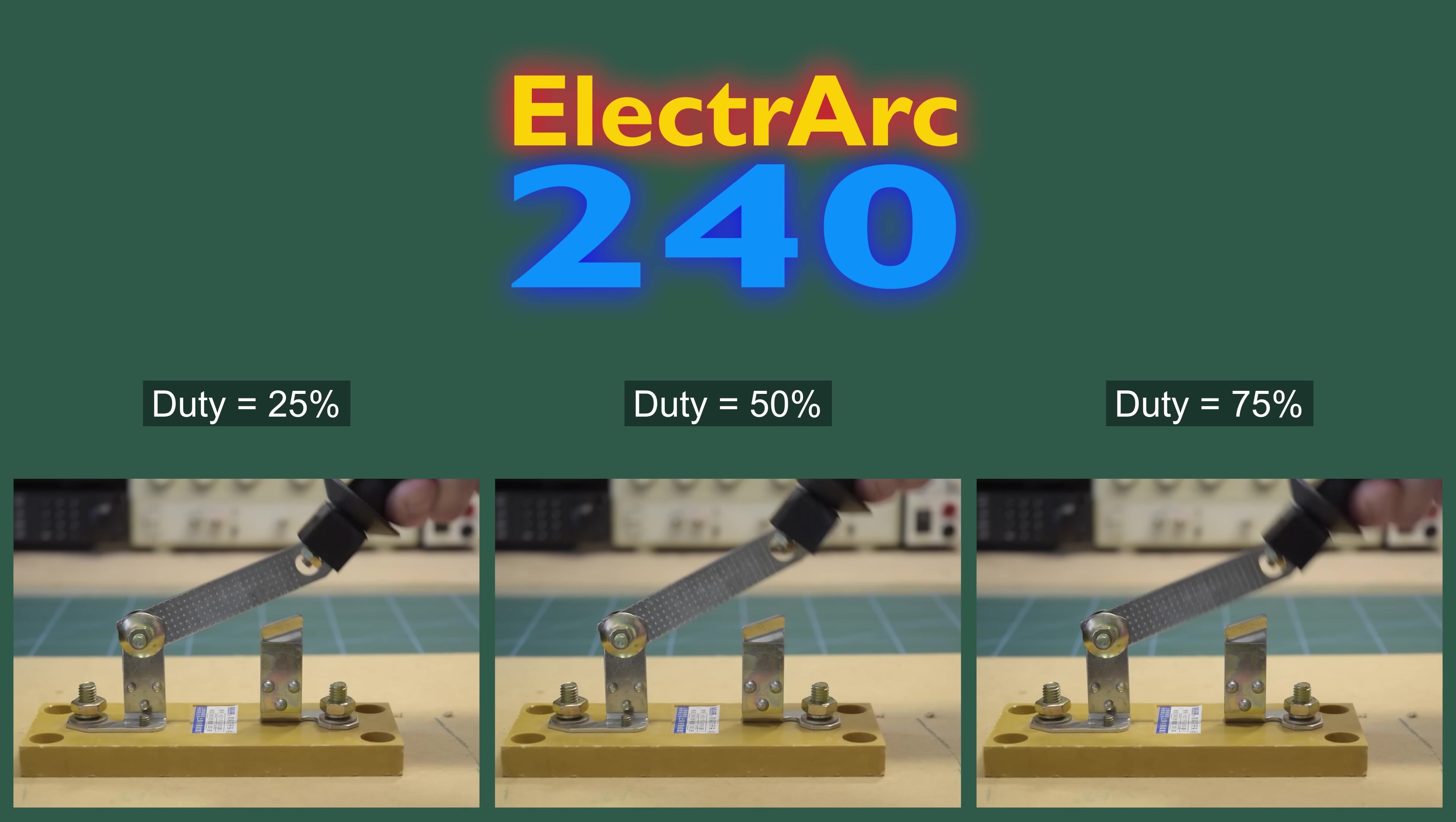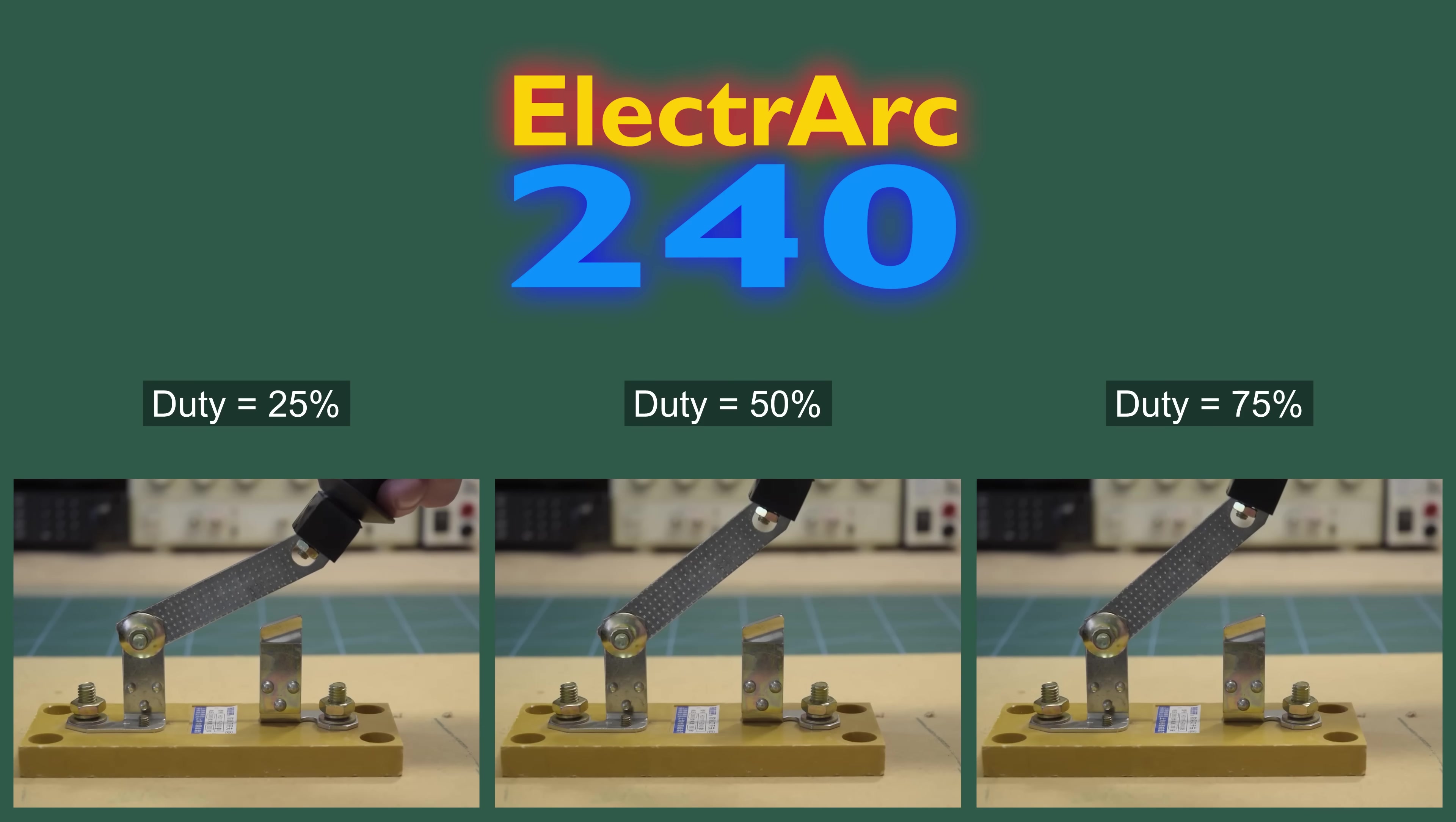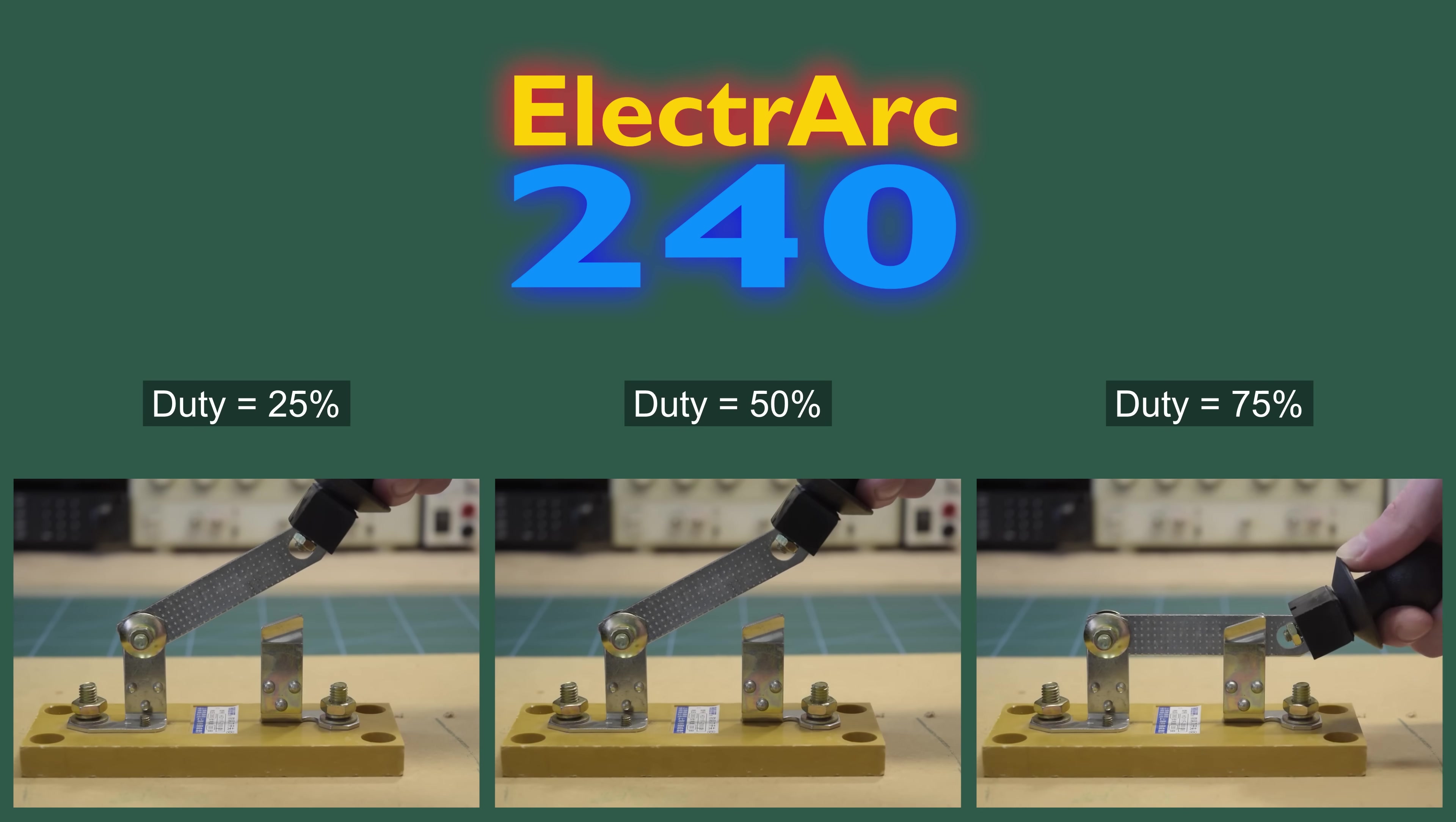By simply controlling how much time we have the switch open and closed, we can control the output voltage of our converter. There are many ways this can be implemented, but the most common by far is to adjust the ratio between time spent on and off, whilst keeping the overall time, the period, constant. This is known as pulse width modulation, or PWM.